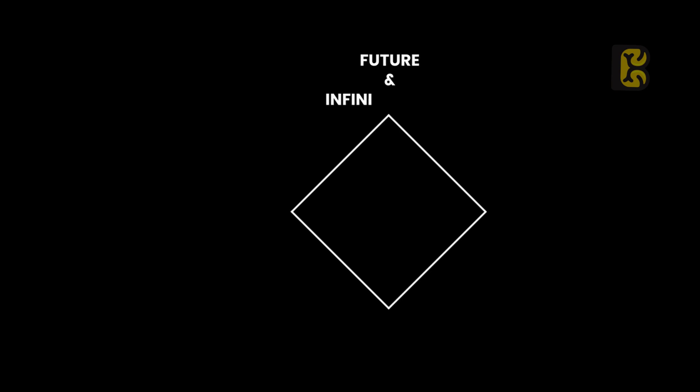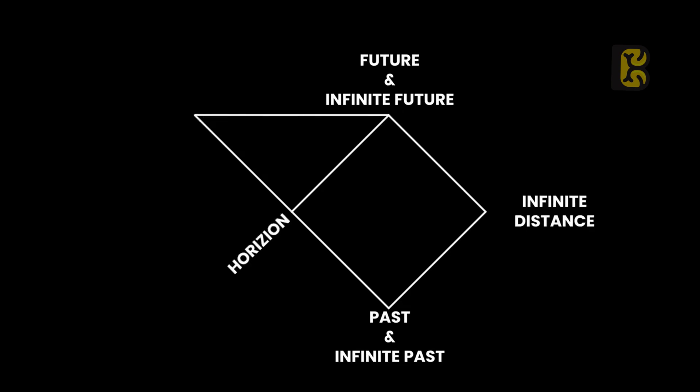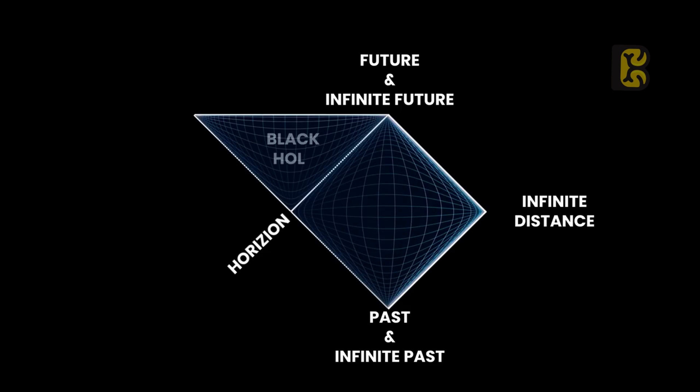But before doing this, let's take a look at a 2D map of the universe and the black hole. This is our universe, where the future and infinite future are upwards, while the past and infinite past are downwards. To the far right is infinite distance, and on the left you will see the horizon and the black hole. As we can see in this diagram, as soon as we use an advanced rocket to cross the horizon of a black hole from the universe and enter inside, we have only one path which leads to the singularity, the end of time.